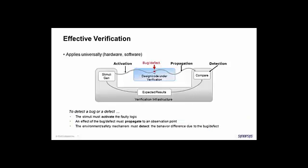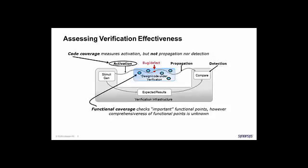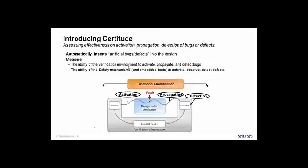What is an effective verification? Well, let's take a simple example. Let's say we have a bug or a defect inside your design. An effective verification will be able to exercise that bug to propagate the effect of the bug, and your checks will be able to point that there is a problem with your design. I will skip this slide, but let's say that code coverage and functional coverage are only addressing a very partial aspect of this full verification picture, which is the activation aspect. So there are useful metrics, but they don't tell you anything about propagation and detection.